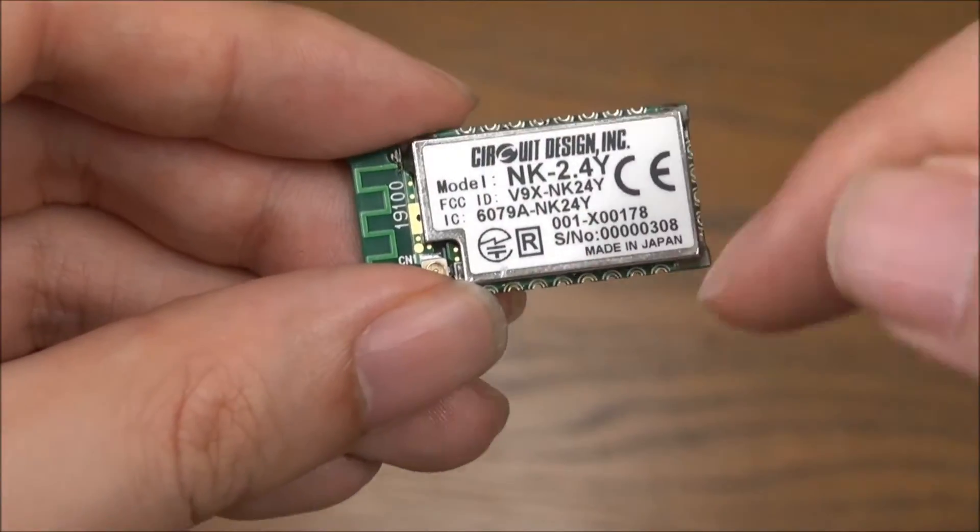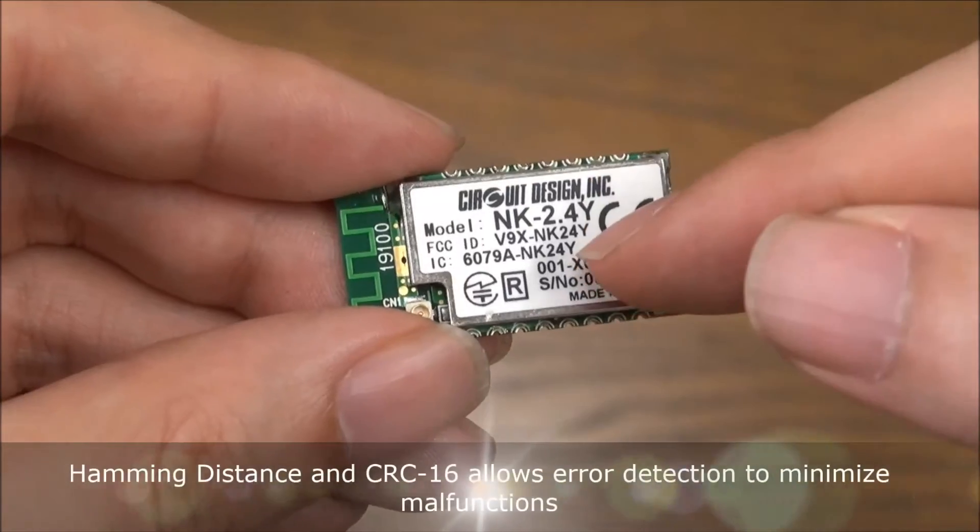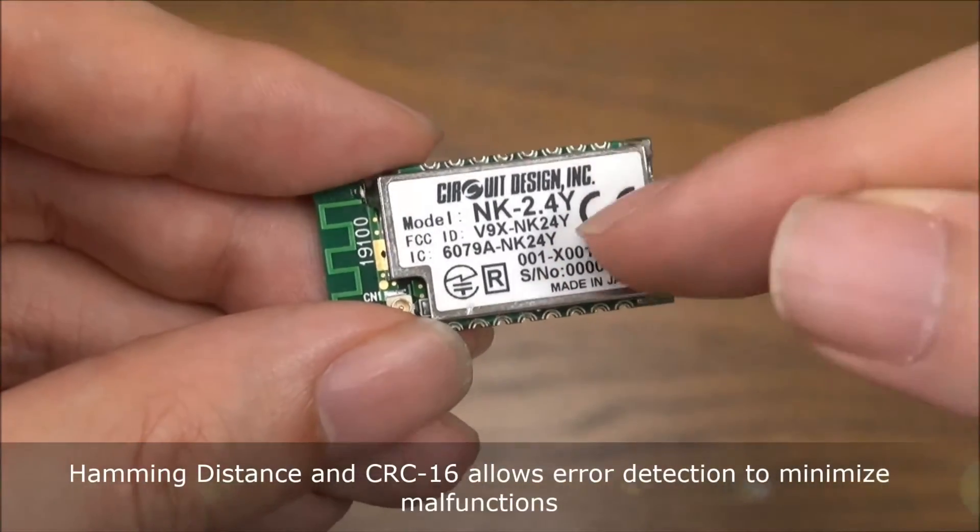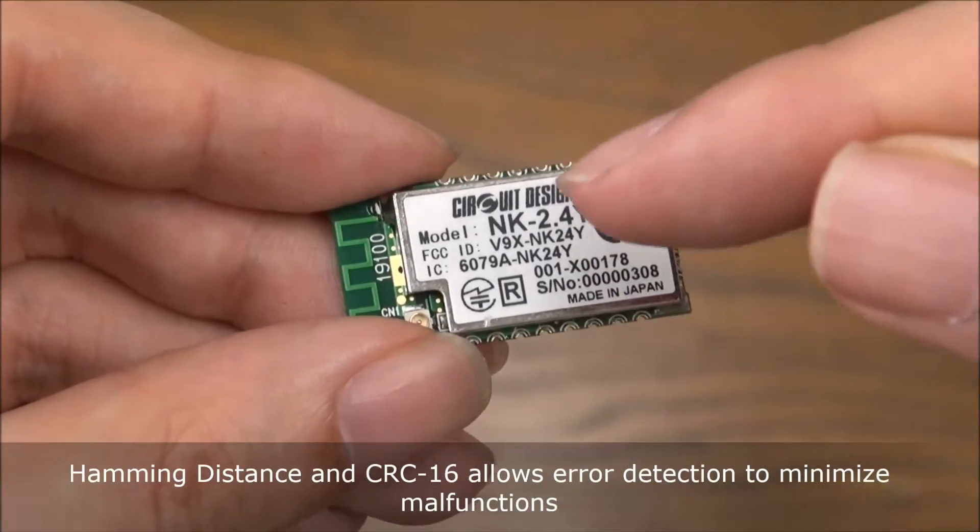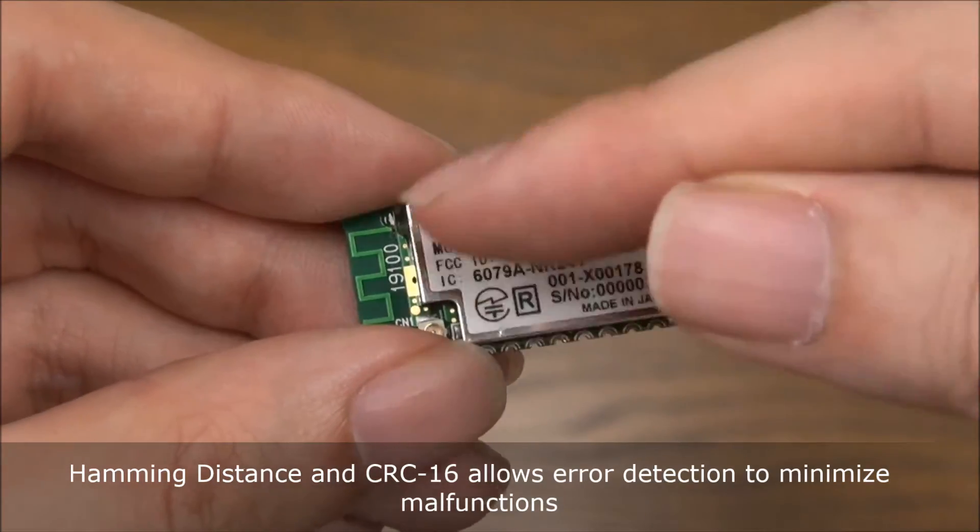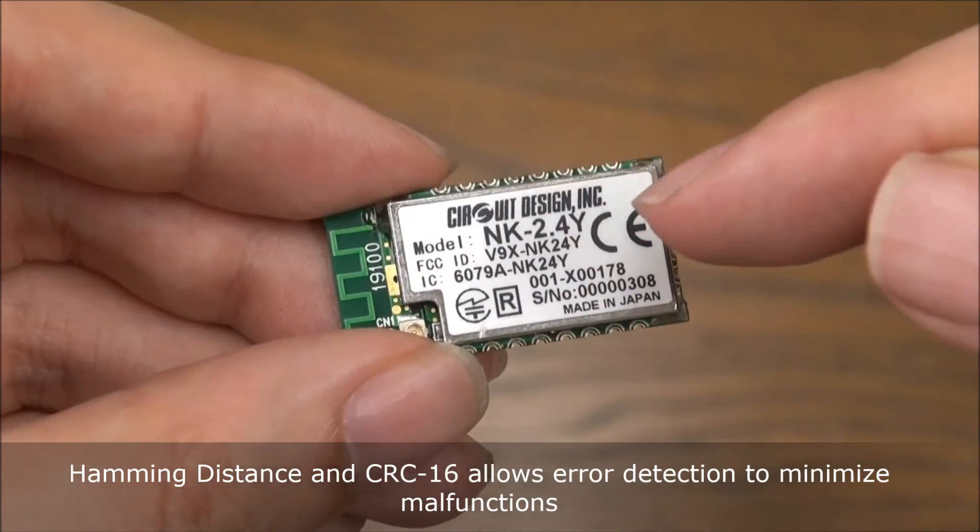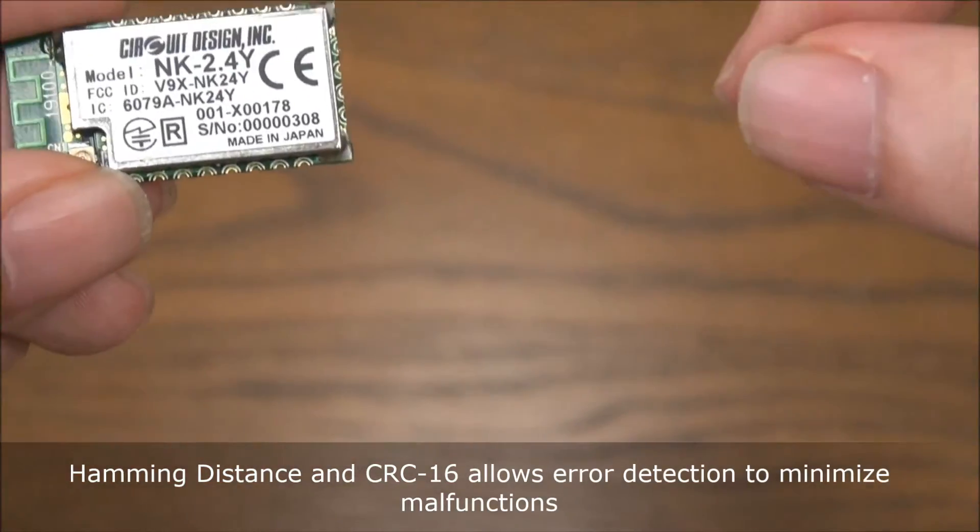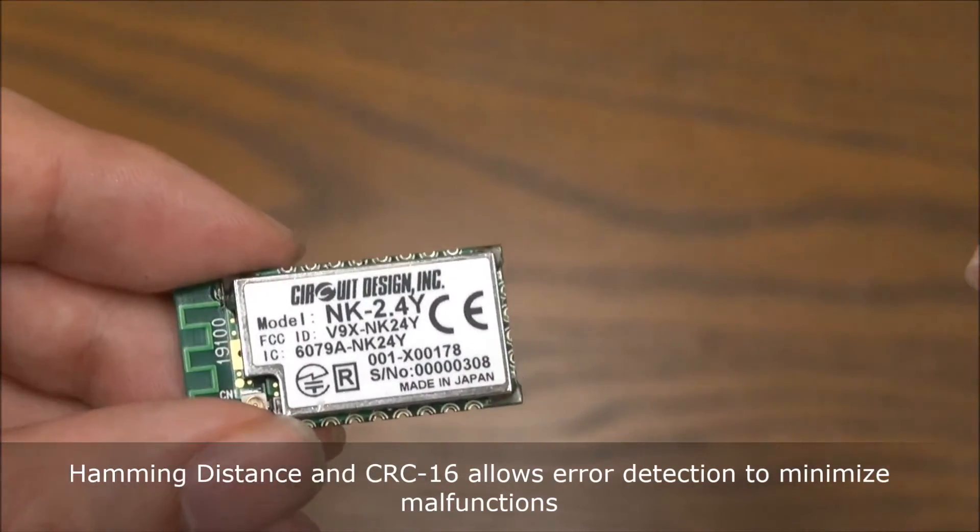It also uses hamming distance, a value of 6, it has CRC16 error correction. So all that helps to minimize any malfunctions, especially when you have multiple systems in one area.